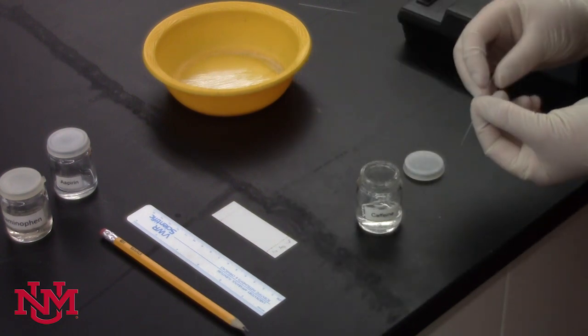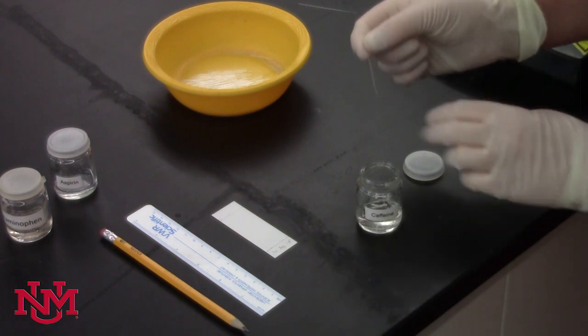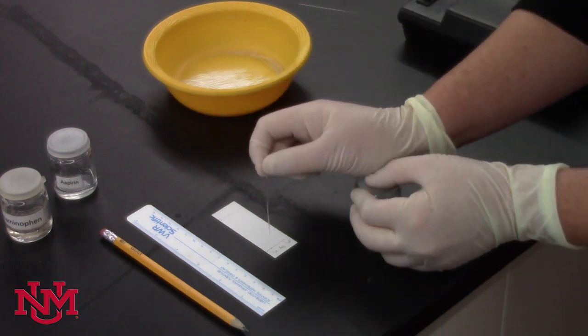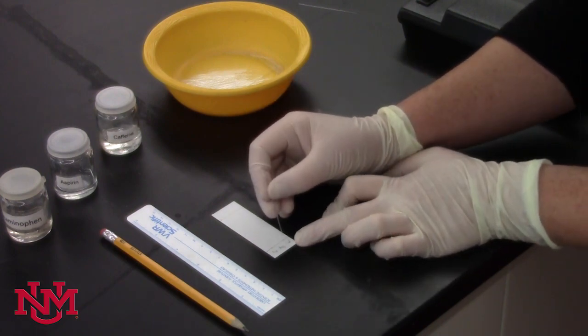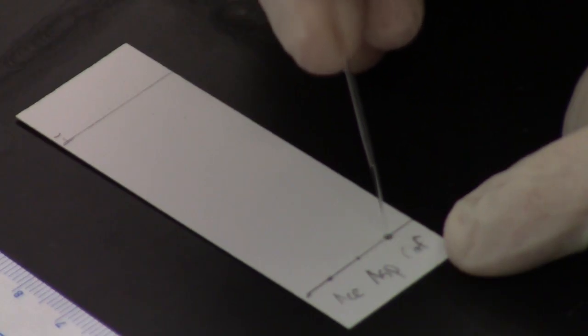Finally, we have caffeine. Take a third spotter, dip it into the caffeine sample, and spot the caffeine spot. Again, touching it just a tiny little bit at a time until you've transferred material there.